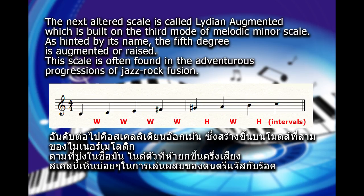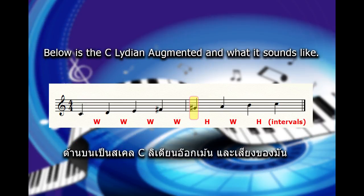The next altered scale is called Lydian augmented, which is built on the third mode of the melodic minor scale. As hinted by its name, the 5th degree is augmented or raised. This scale is often found in the adventurous progressions of jazz rock fusion. Below is the C Lydian augmented and what it sounds like.